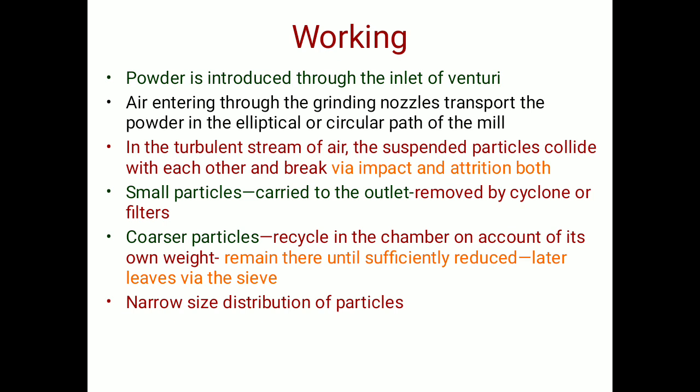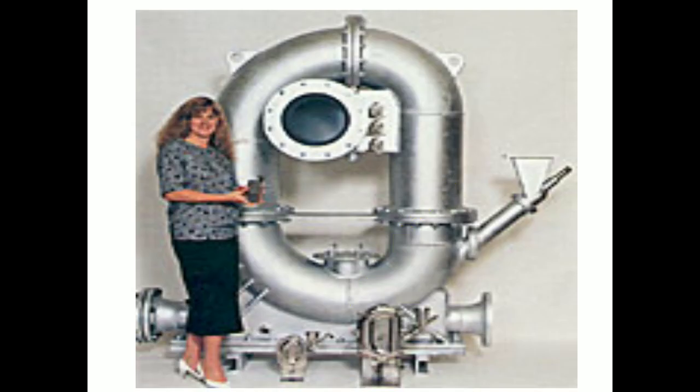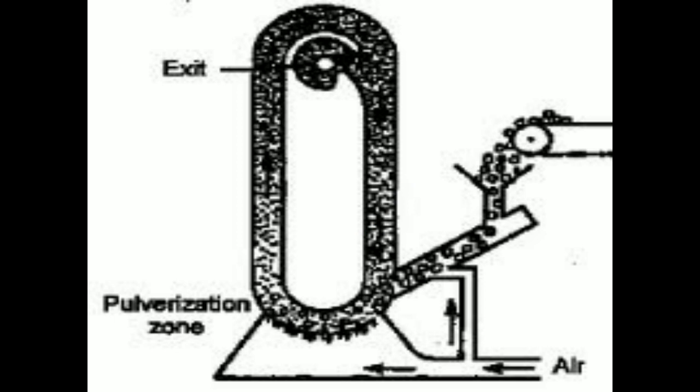The smaller particles are carried to the outlet, which is removed by cyclone or filters. The coarser particles get recycled in the chamber — on account of their own weight they remain there until sufficiently reduced, then leave via the sieves. This results in a narrow size distribution of particles, meaning the difference in particle size is very small.